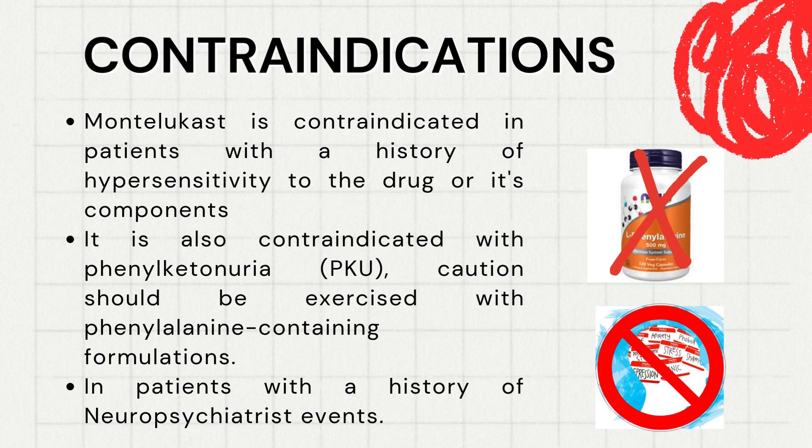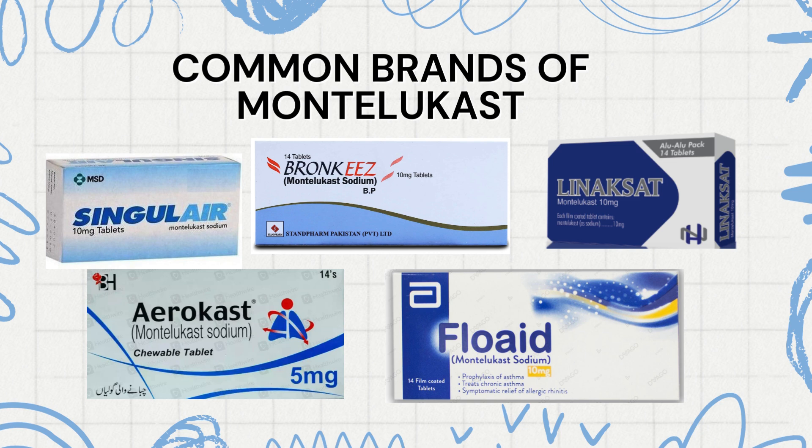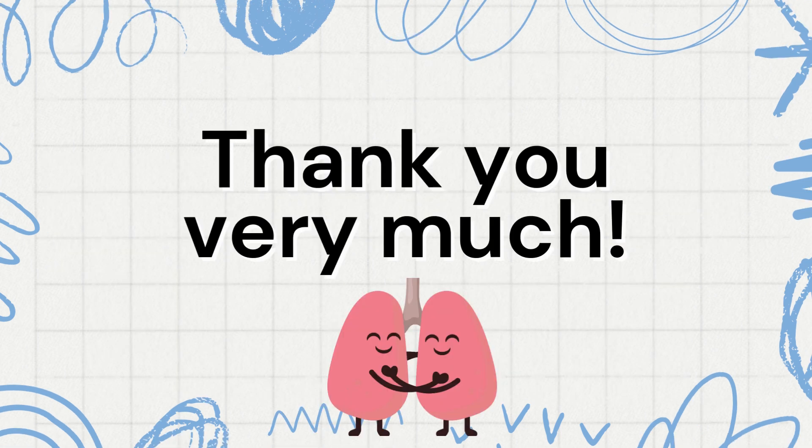Contraindications: Montelukast is contraindicated in patients with hypersensitivity to the drug or its components. Caution should be exercised with phenylalanine-containing formulations and in patients with a history of neuropsychiatric events. Common brands of Montelukast available in Pakistan include Singulair, Bronquis, Linuxat, AeroCast, and FlowAid. Thank you very much for watching this video.